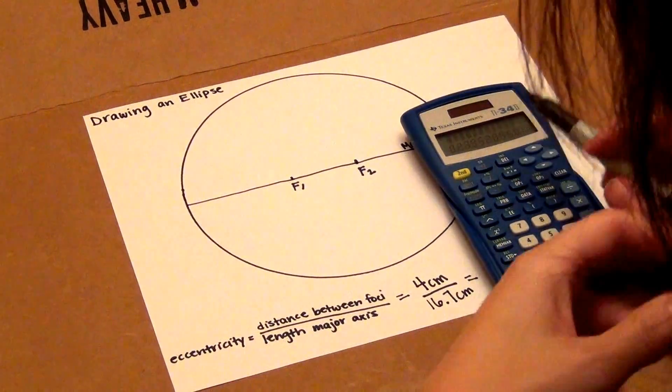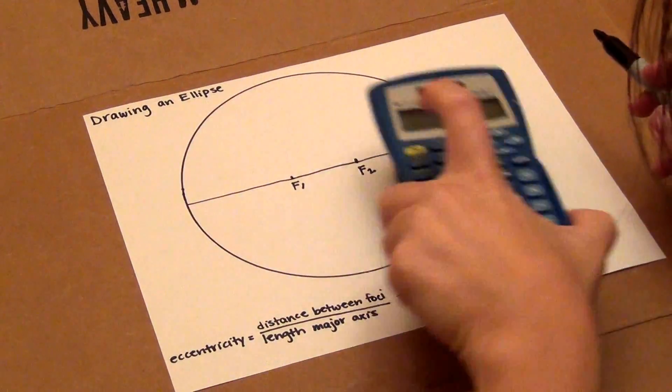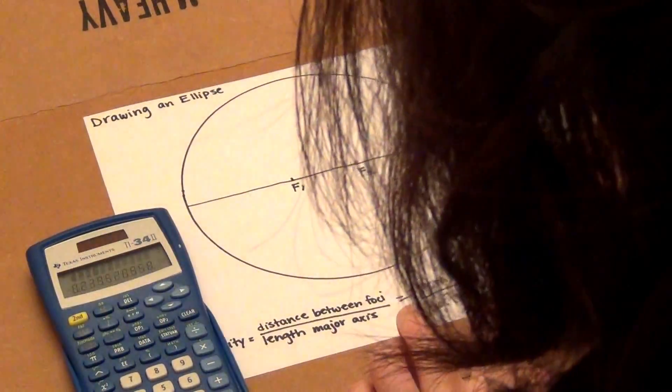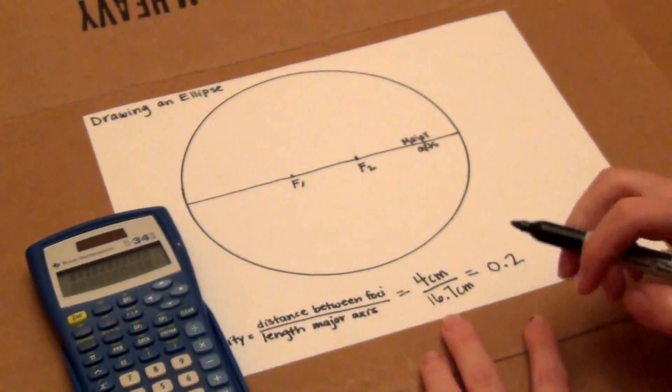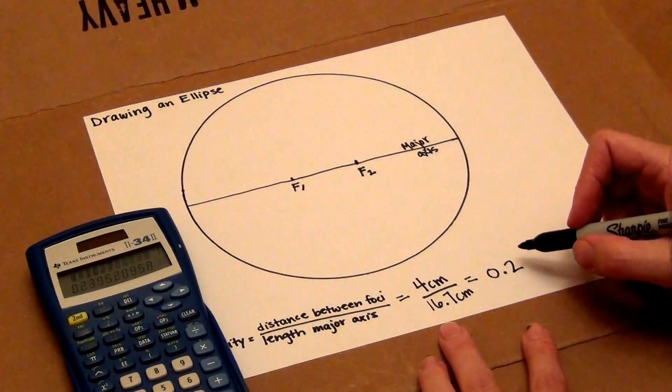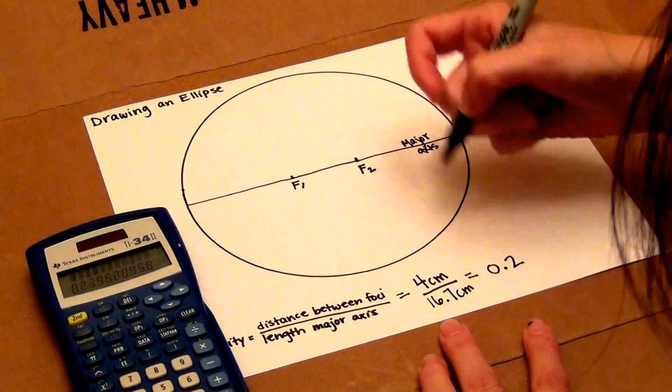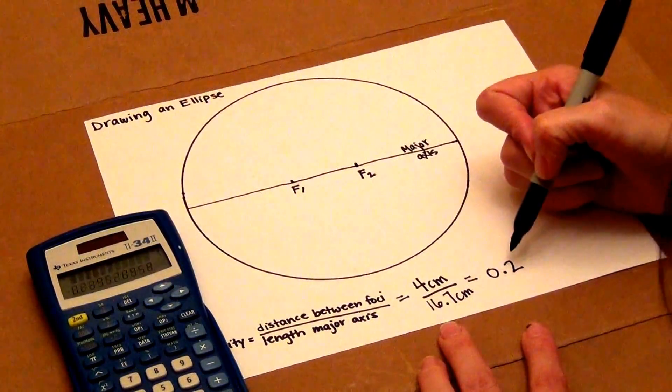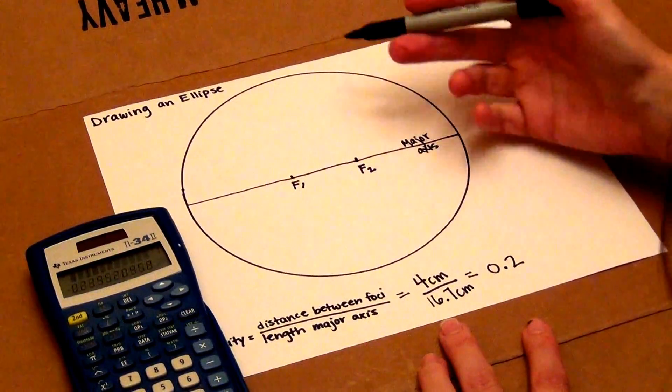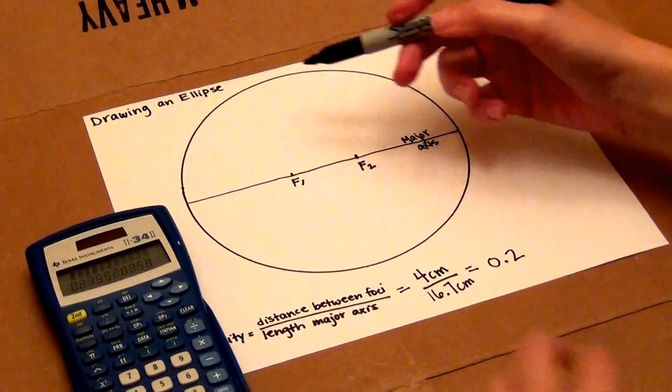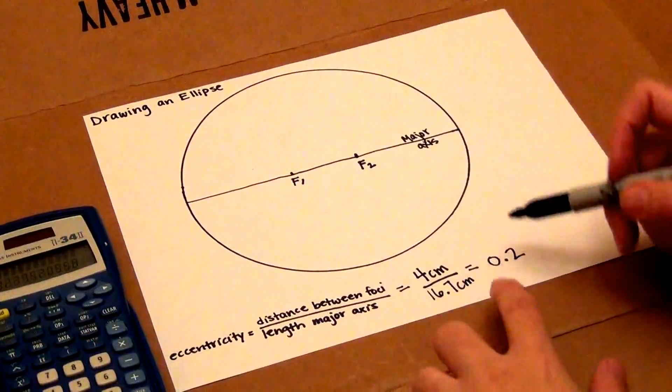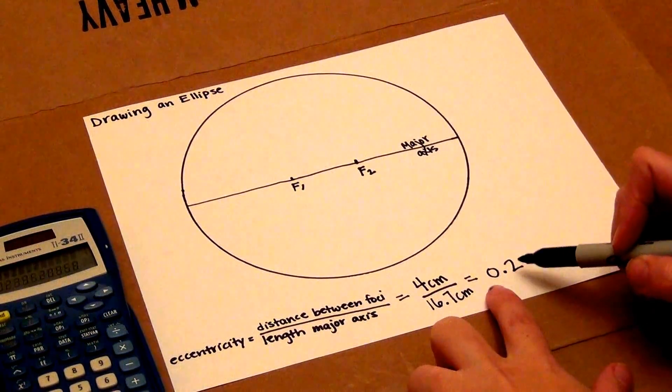If I round that to the nearest tenth, the eccentricity of this ellipse is 0.2. You don't have to put any units for eccentricity. If this were a perfect circle, the eccentricity would be 0. If it were a straight line, the eccentricity would be 1. This ellipse has an eccentricity of 0.2.